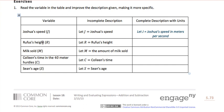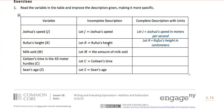The second one: Rufus's height, represented by r. That's our variable. So let r equal Rufus's height. Well, we certainly need to know a little bit more about that. Let r equal Rufus's height in centimeters — perhaps Rufus lives in Canada or one of the many other countries that measure in the metric system rather than customary.